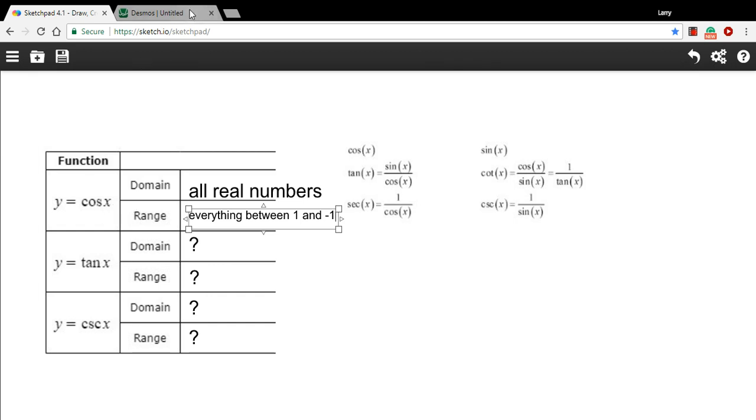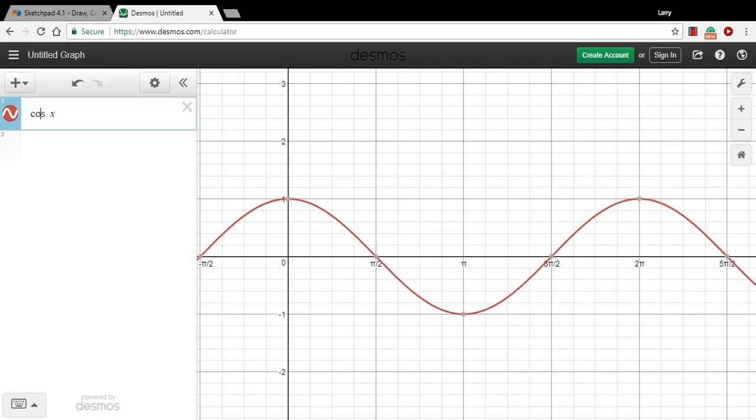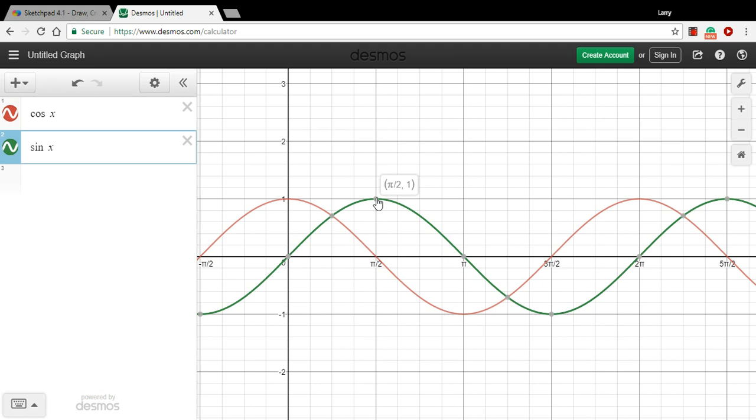We weren't asked about the sine here, but it's going to be the same. And you can see this. I'll just put it on the same graph. The sine is really just the same shape, just shifted over a little bit. So again, on the y, it's going to go from 1 to negative 1, and it's going to cover everything on the x.